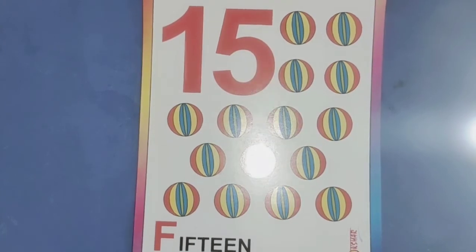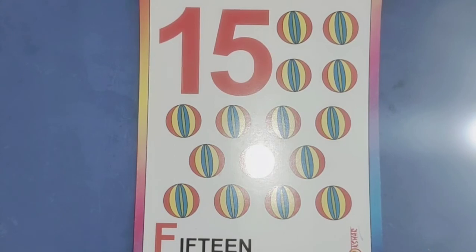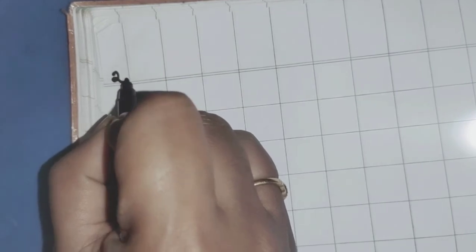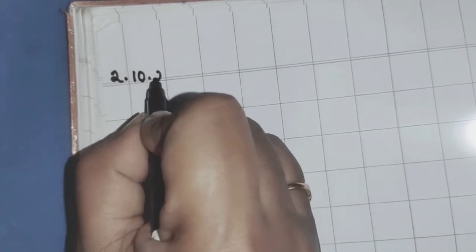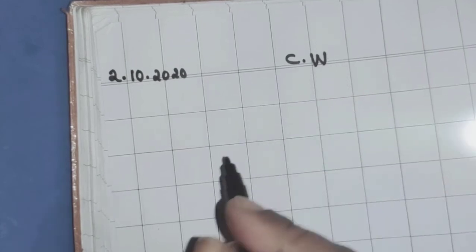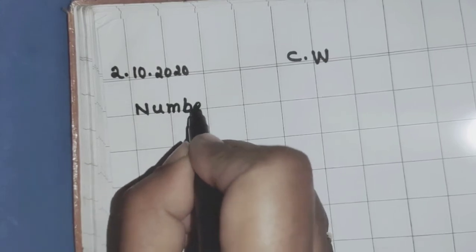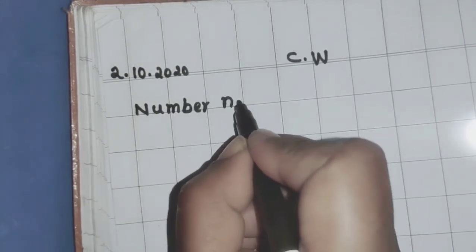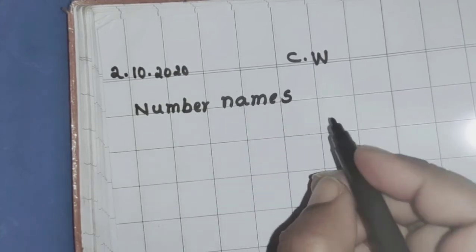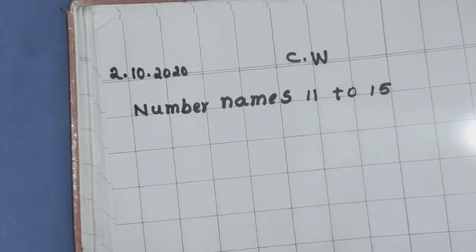So these are the spellings of 11 to 15. All of you write in your classworks 11 to 15. Children, see — first write date 2-10-2020. And write here C.W. and put the heading: N U M B E R — number N A M E S — names, 11 to 15.